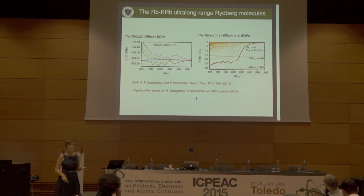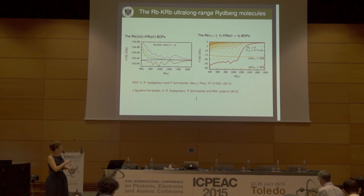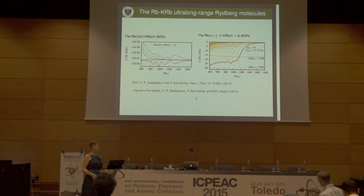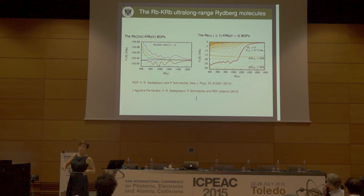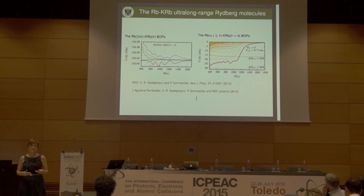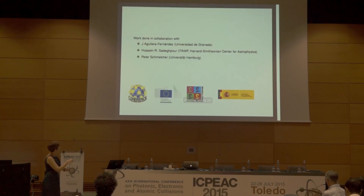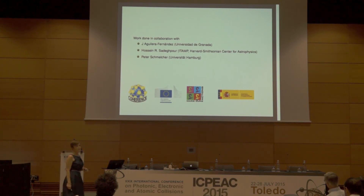I would like to conclude. I have shown you the main properties of these ultra-long-range Rydberg molecules. We have two different kinds of Born-Oppenheimer structure: the one coming from the degenerate manifolds has potential depths of the order of gigahertz, and the one from the 25D rubidium Rydberg states has depths of only megahertz. We now need experimentalists brave enough to produce this system, because it could be created in one of these ultra-cold mixtures where they have KRb or any other diatomic molecule, and some atoms were not yet converted to diatomic molecules and are still available for Rydberg excitation. This work has been done in collaboration with my PhD student Javier Aguilera-Fernández, with support from the ITAM, and Peter Schmelcher from the University of Hamburg. Thank you for your attention.